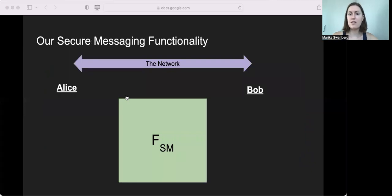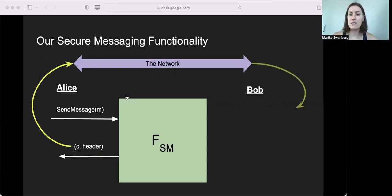So let's begin with our secure messaging functionality. When Alice wants to send a message, she asks FSM. In response, she'll get a ciphertext header pair. Then Alice herself sends the pair over the network. And later, when Bob receives the ciphertext and header, he can ask FSM for the original message back.